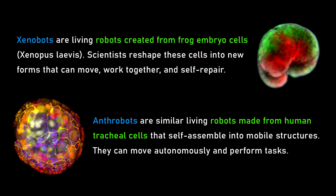For example, xenobots and anthrobots — these are biological systems that have never existed on Earth before. We have no idea what their cognitive properties are, we're still learning. You can't predict that from first principles because they're not at all what their past history would inform you of.